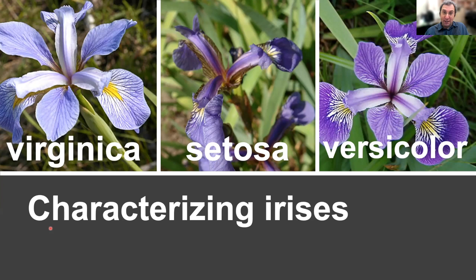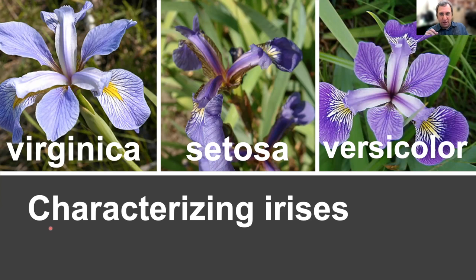These are irises. Apparently there are multiple varieties — I don't even know what makes an iris an iris. But these are the virginica, setosa, and versicolor. There's a dataset from the 1930s where Fisher quantified a bunch of these irises by looking at sepal length, sepal width, petal length, and petal width.